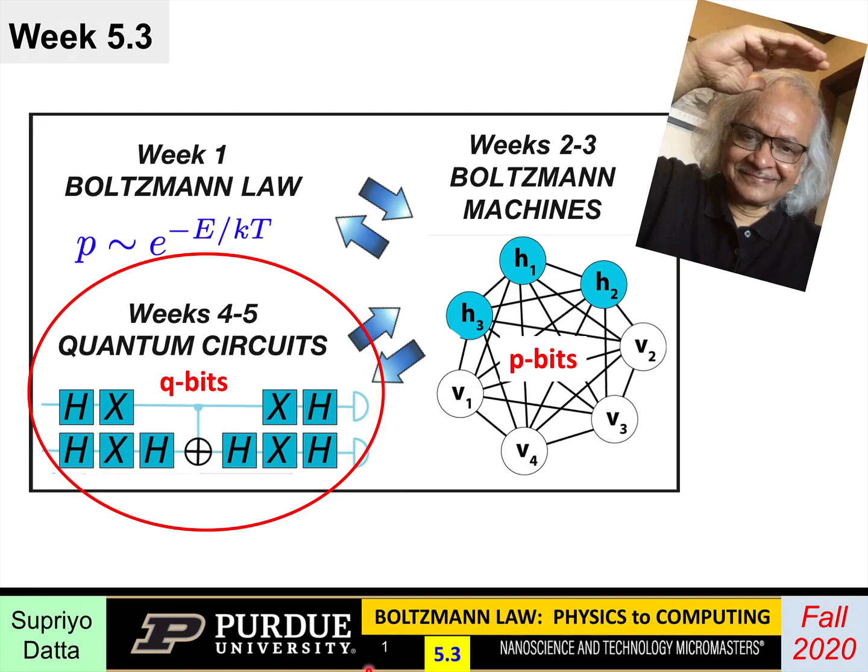Welcome back to week five of our course, Boltzmann Law: Physics to Computing. This is the third lecture for this week. In the last lecture, we introduced the Hadamard gate and its magical property that when you apply it once to a delta function, where the amplitude is non-zero only for a particular component, you spread it out over all components. Delta becomes H. But when you apply it a second time, you get back the delta. This property is widely used in many quantum circuits, and in this lecture we'll talk about Grover's algorithm, which makes use of this property and others.